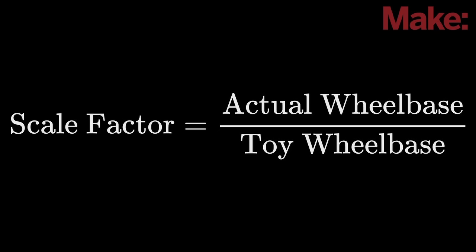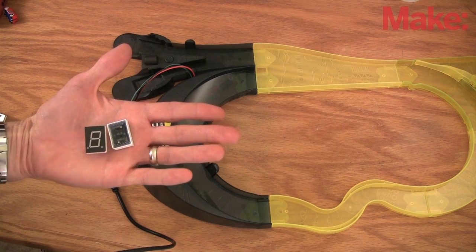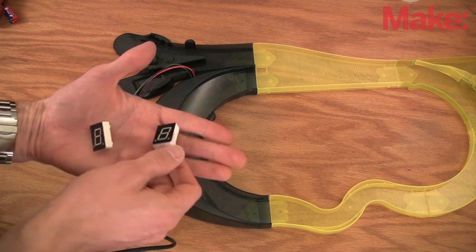If this is a model of a Toyota Prius, the scale factor is 1:68. We use these seven segment LEDs to display our scaled speed.